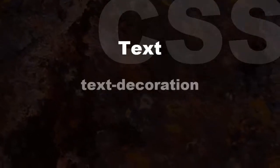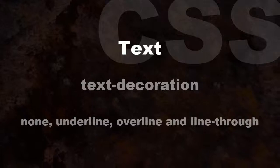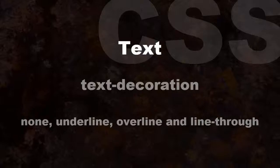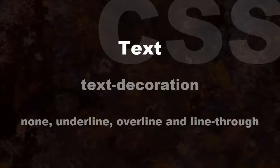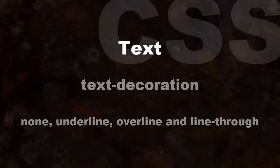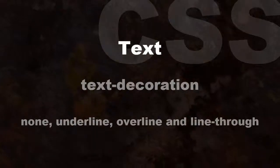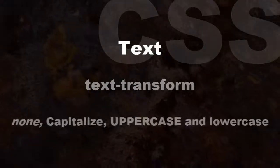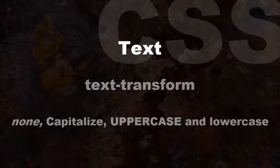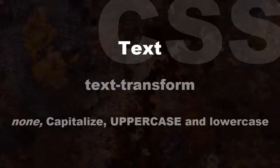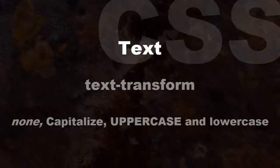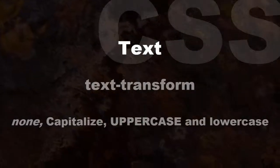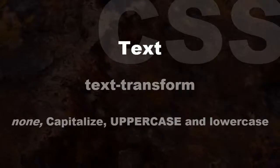Text-decoration usually refers to the underlining of links. Some designers eliminate the underline with the none value. Other possible values include underline, overline (a line above the text), and line-through (a strikethrough). Text-transform controls the case of letters. Values include none (renders text exactly as-is, the default), capitalize (first letter of each word), uppercase (all characters uppercase), and lowercase (all characters lowercase).